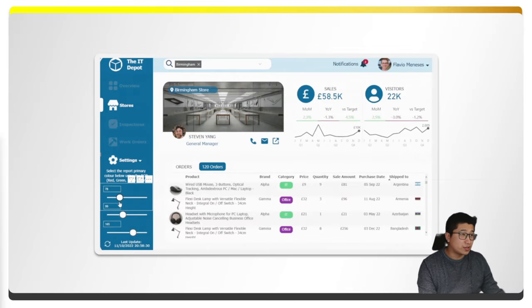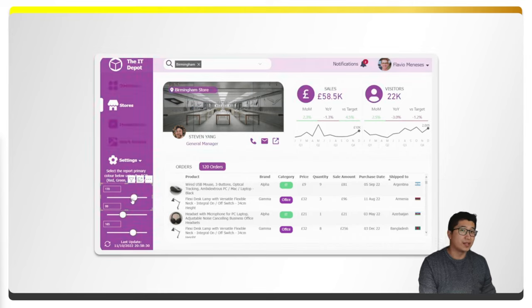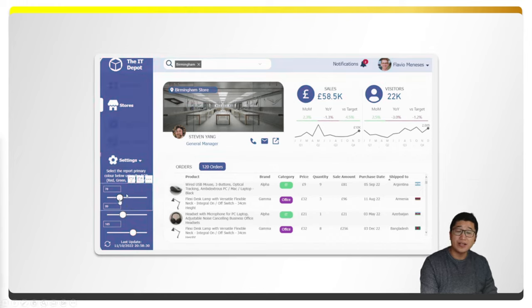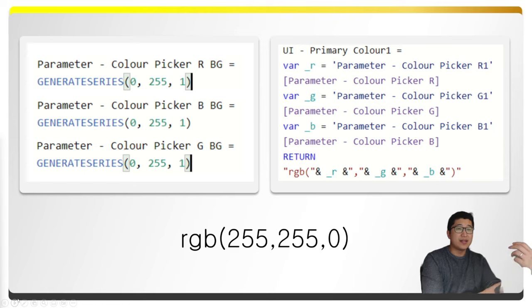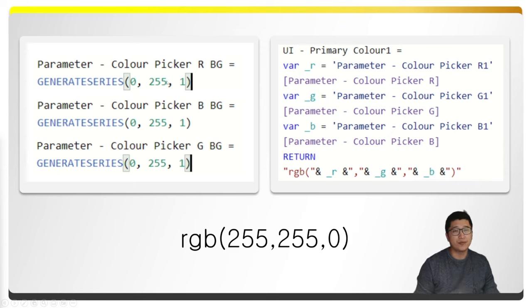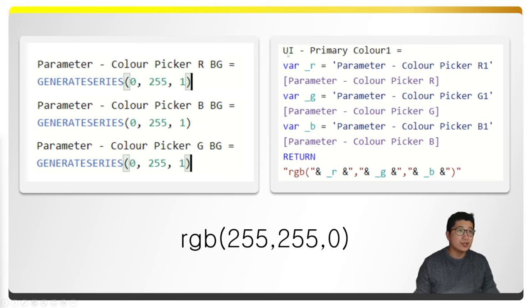I want to give credit where it's due. A lot of this was built upon Flavio Meneses' work, where he created a report using exactly this concept of red, green, and blue sliders to affect what color is used on the theme. The way it works is there are essentially three numeric parameters — one for red, one for blue, one for green — from zero to 255, which is the maximum for RGB. After having these three parameters, you need a measure to bring them together from the selected values to create a text string like an RGB color value.